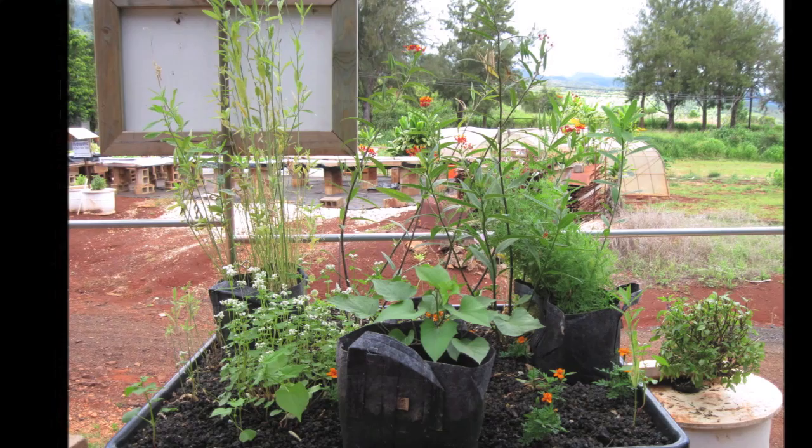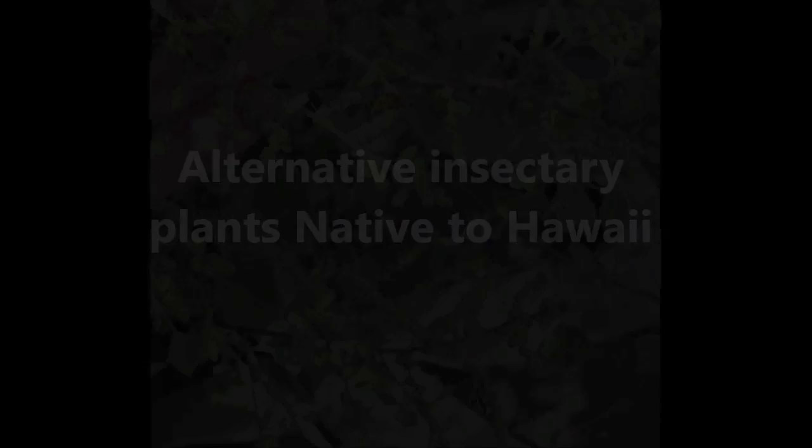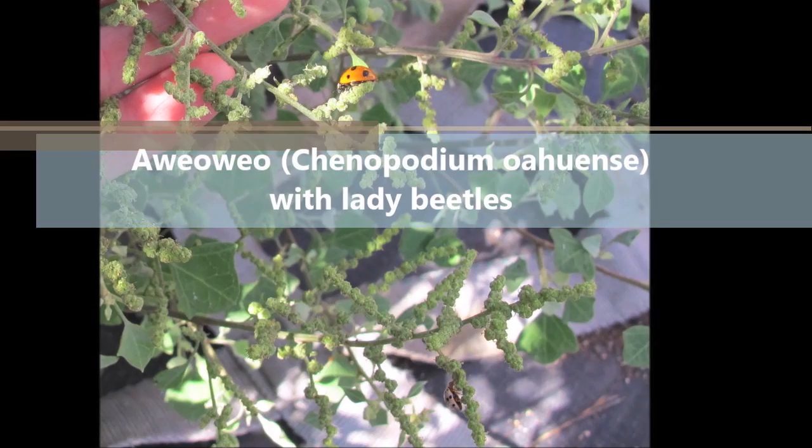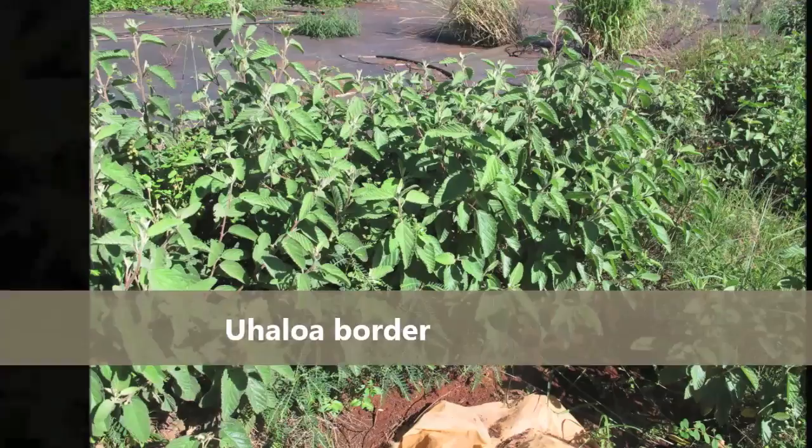In the event that farmers want to use native plants in insectary settings, Aveo Aveo is a native Hawaiian plant that attracts mites and thus lures lady beetles. Alternatively, Uhalua produces small flower clusters along the stem that always attract bees and wasps. In agro-ecosystems, these wasps will then eat caterpillar pests. Growers can use these native plants as a field border for insectary purposes.